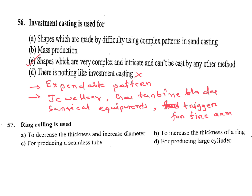Ring rolling is used to: A — decrease the thickness and increase the diameter; B — increase the thickness of a ring; C — for producing seamless tubes; D — for producing large cylinders. It is a rolling operation. After ring rolling, the thickness reduces and the diameter increases. Answer is A.